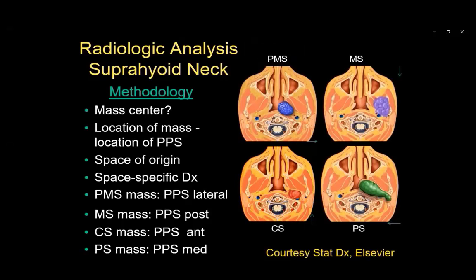How do we determine where a lesion is located in the suprahyoid neck? The location of the parapharyngeal space fat can really help. A parapharyngeal space mass displaces the fat laterally. A masticator space mass causes posterior displacement of the parapharyngeal fat. A carotid space mass causes anterior displacement of that fat. And a parotid space mass causes medial displacement of the parapharyngeal space fat.